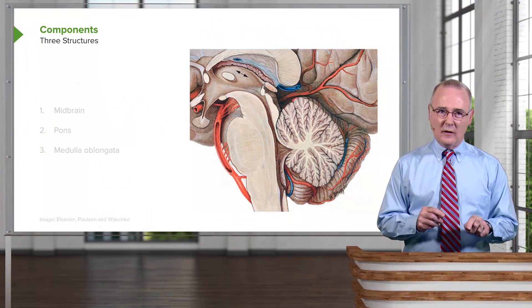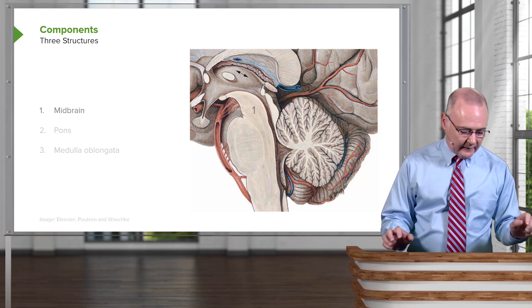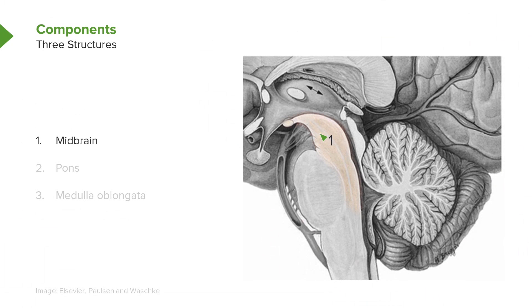The first thing to realize is what three structures make up the brainstem. The most superior one is the midbrain. Just below that is the expanded area called the pons, and inferior to the pons is the medulla oblongata, which continues inferiorly as the spinal cord.